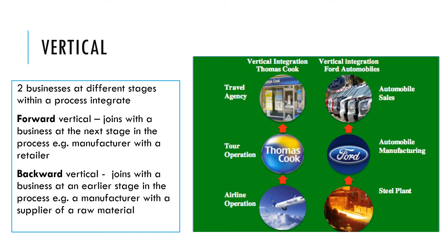An example of a forward vertical merger would be if a steel plant took over a car manufacturing company — different stages of the process, moving nearer to the customer. An example of a backward vertical merger would be if a tour operator took over an airline company — they are getting further away from the people who book holidays and moving towards a supplier who provides the service, i.e., backward, getting further away from the customer.